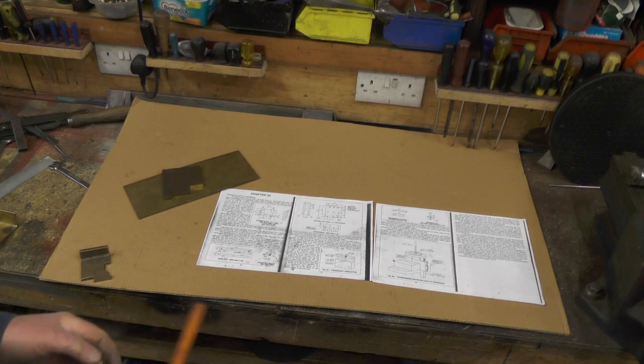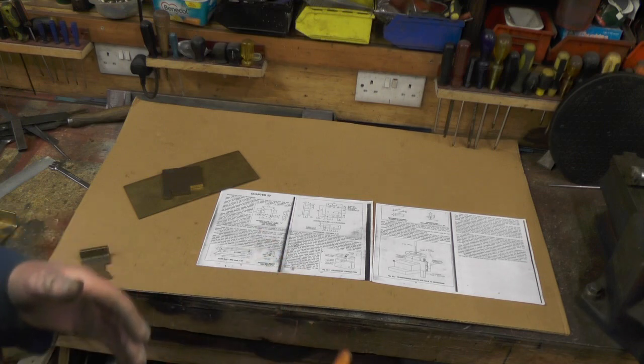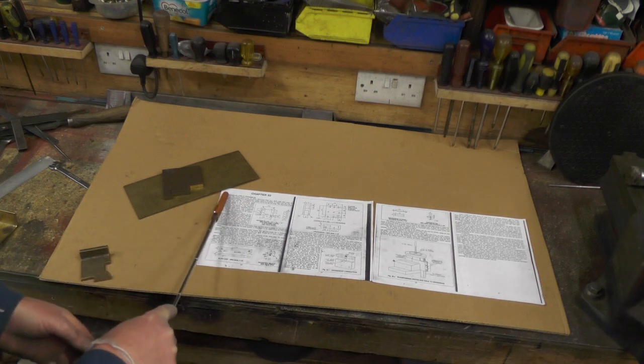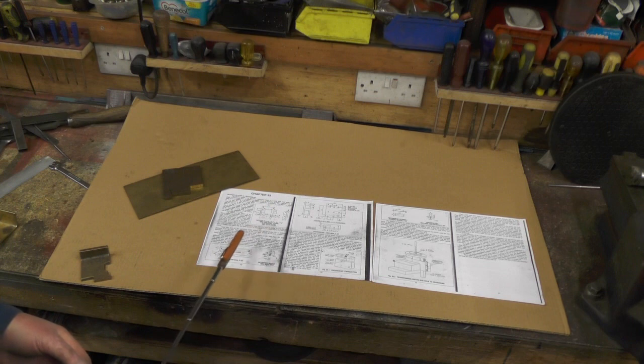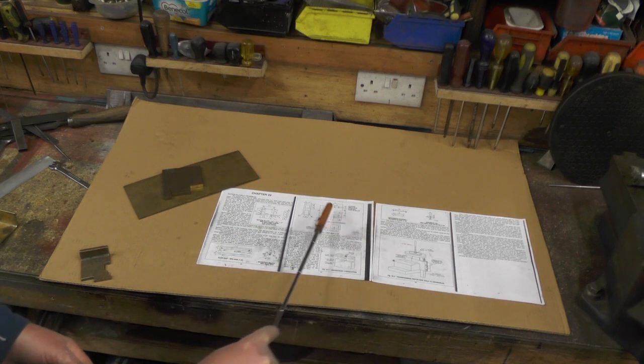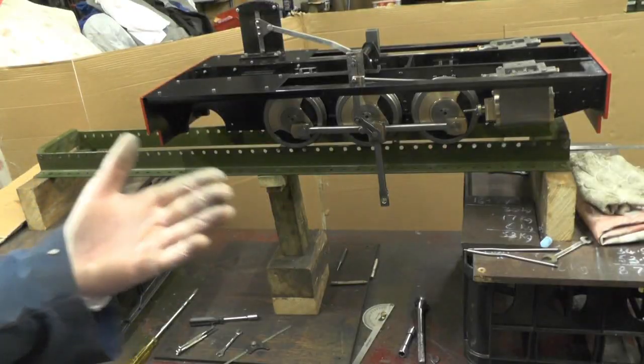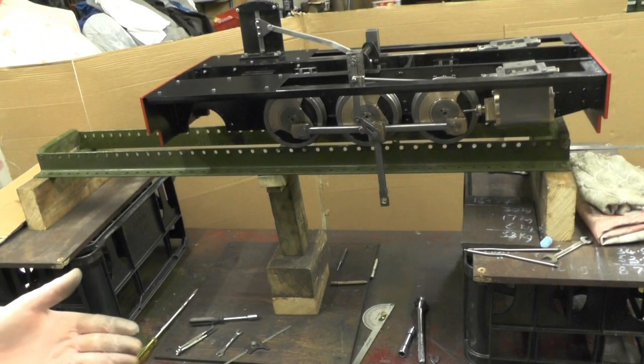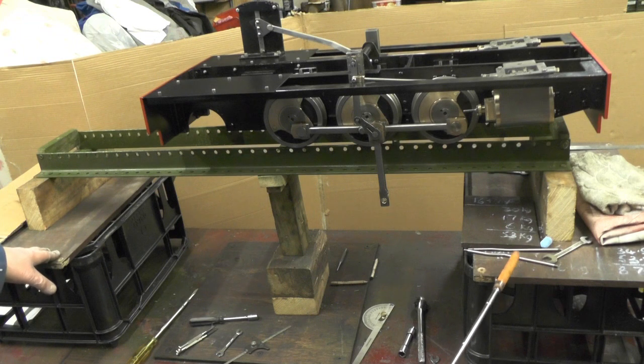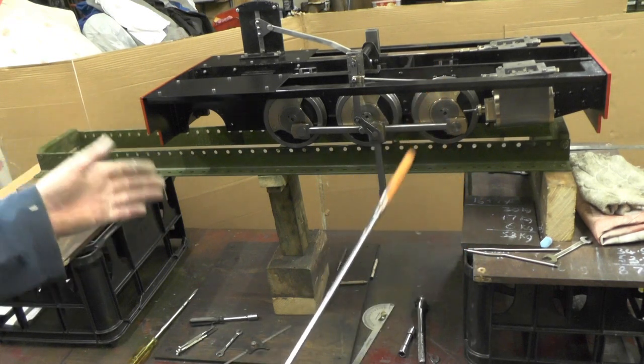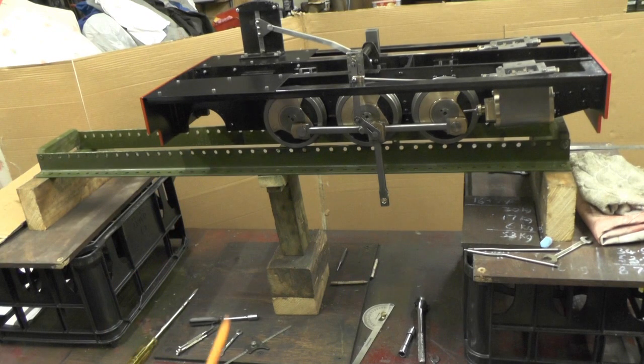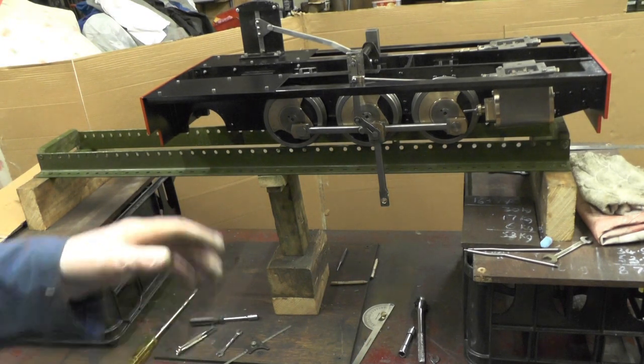My next parts are going to be the motion plates, the crossheads, the slide bar, and the crosshead slipper. The bench is raised to its maximum with a couple of milk crates to raise the track up so I'm working at a comfortable height. This is the first time I've seen my wheels in motion without me having to get hold of them and turn them.